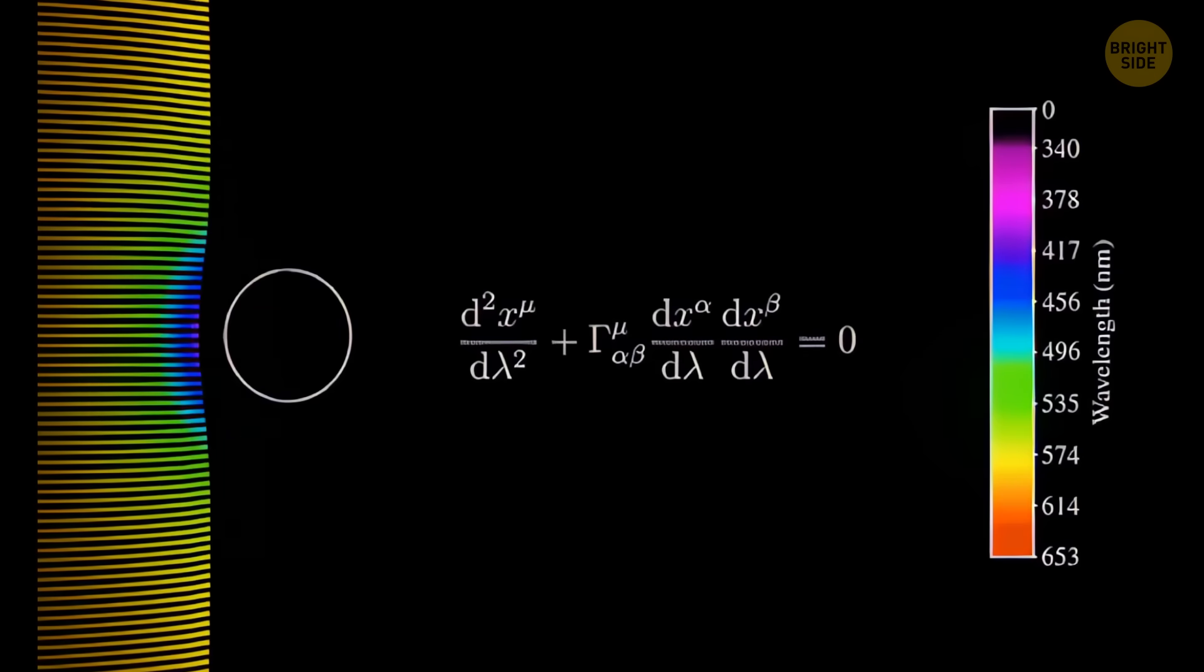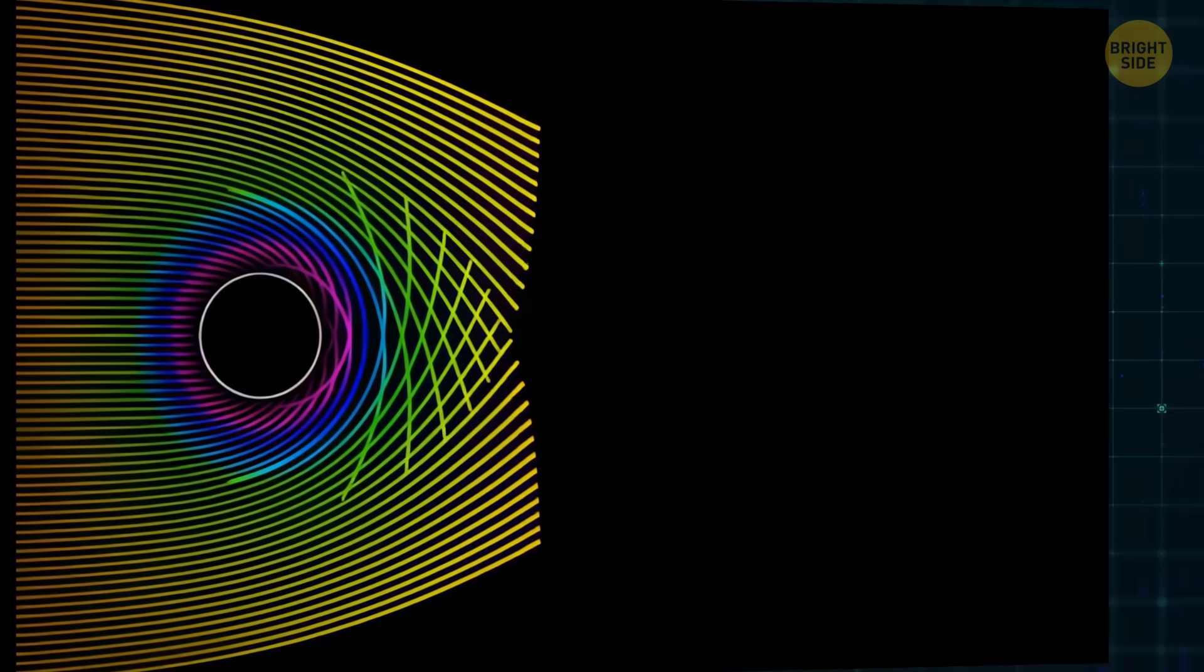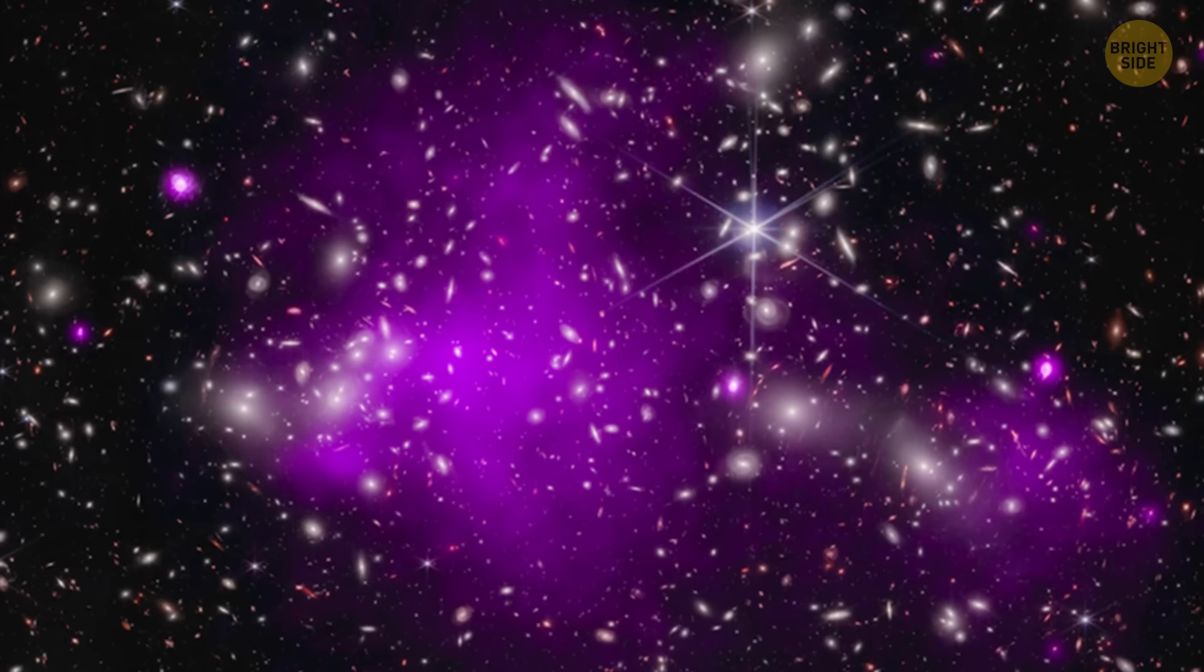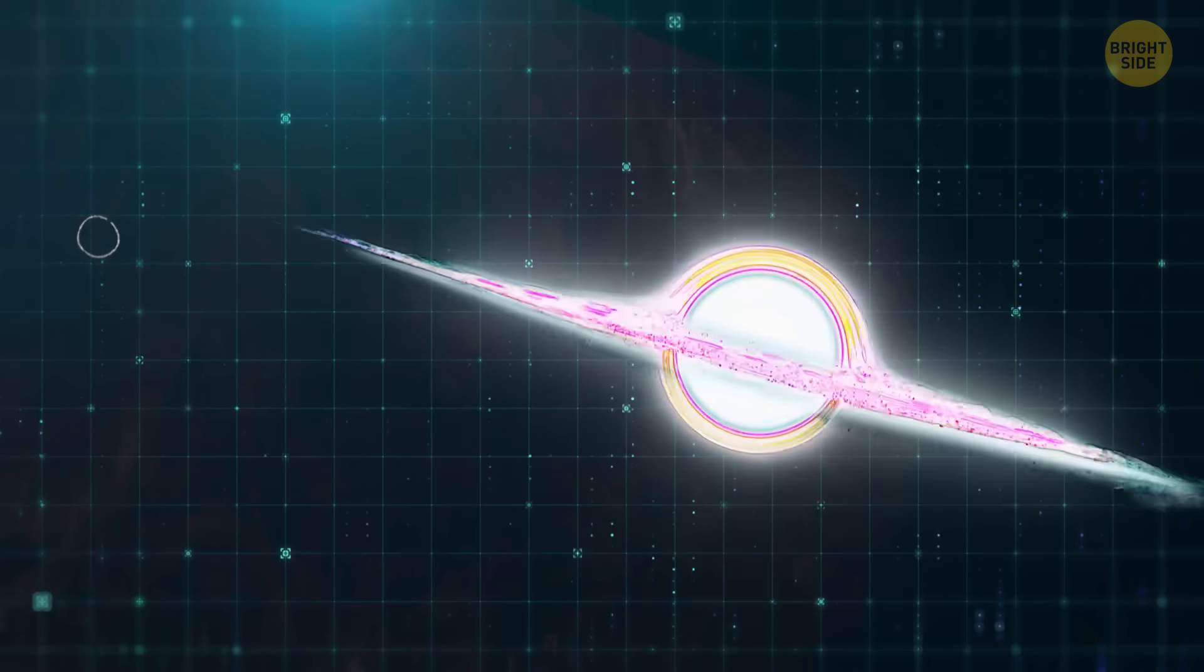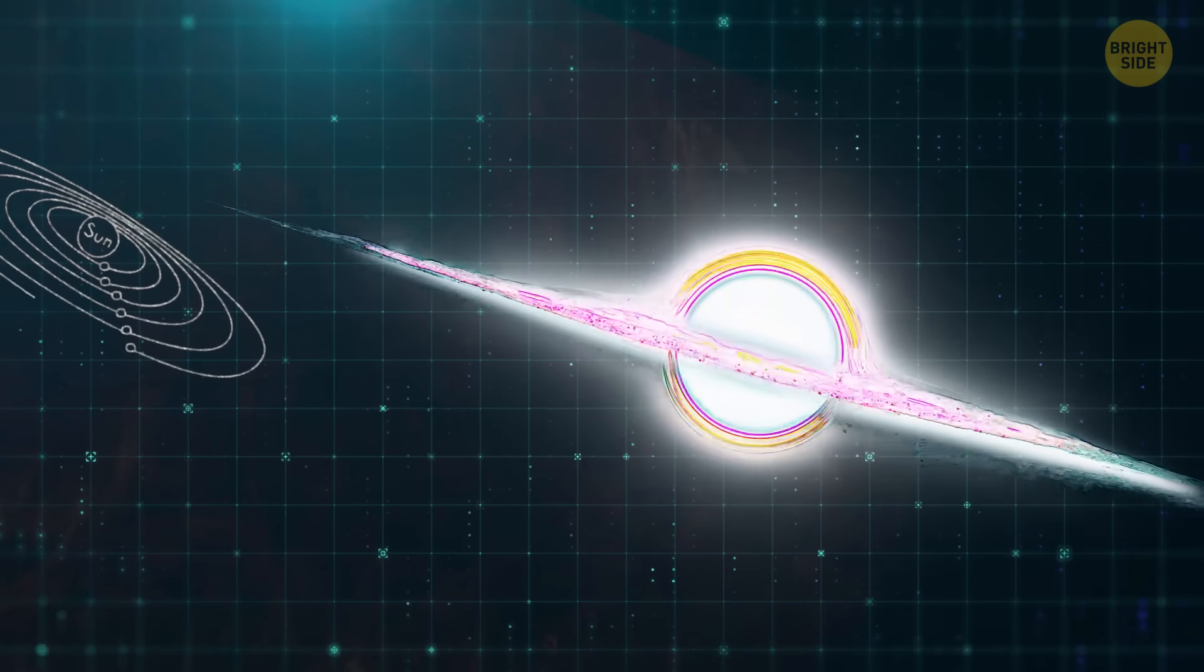That's where the new study comes in. Researchers looked at a weird type of black hole called a Schwarzschild black hole. These ones don't spin, don't have electric charge, and very predictably are totally hypothetical. They're just the math version of a black hole, not something we've seen in space.